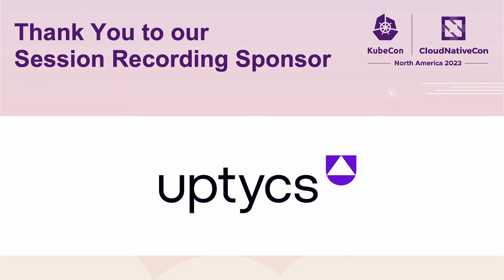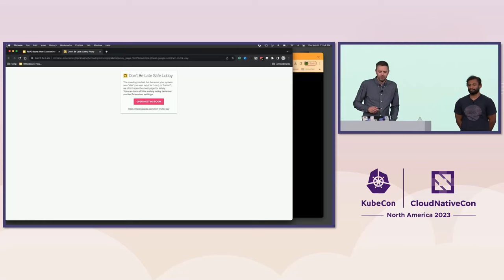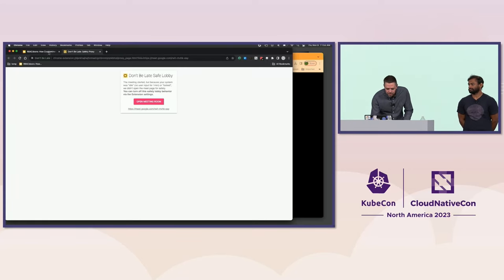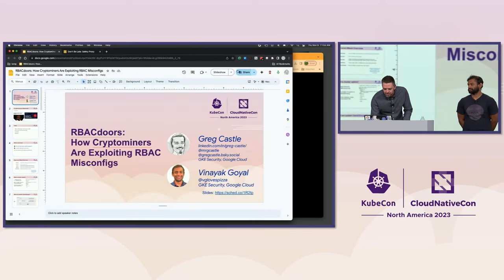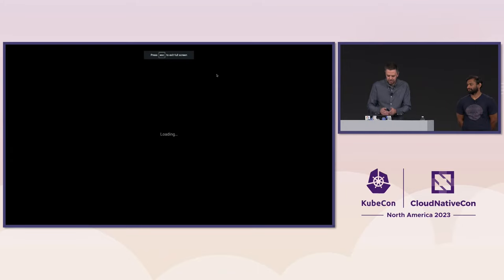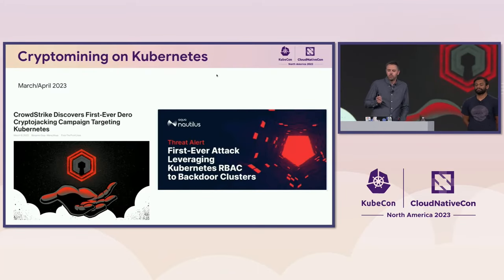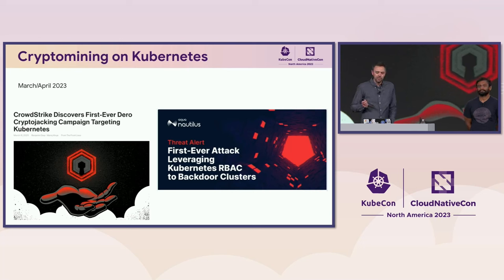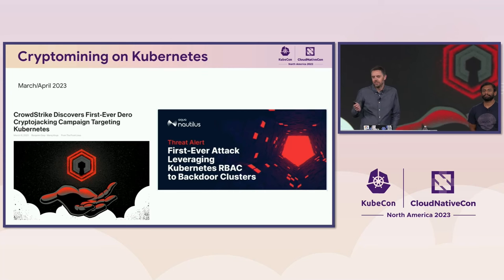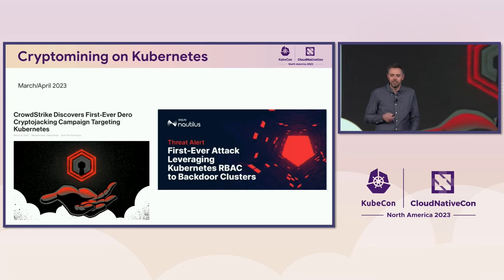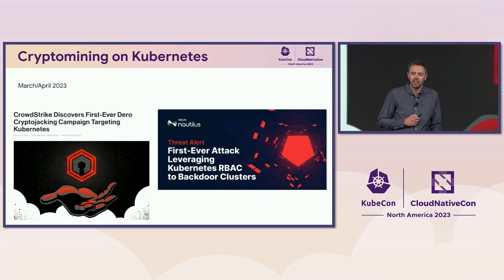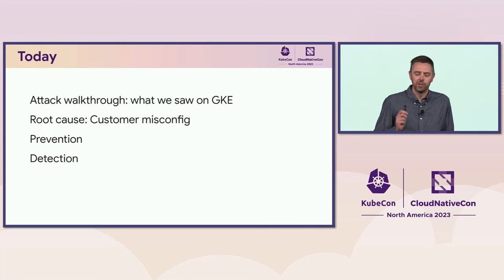We're going to talk about how crypto miners have been exploiting some RBAC misconfigurations. If you were paying attention to the press back in March or April, beginning of this year, you might have seen some headlines about new attacks leveraging Kubernetes RBAC to backdoor clusters. We saw some of that happening on GKE, and that's what we're going to talk about today.